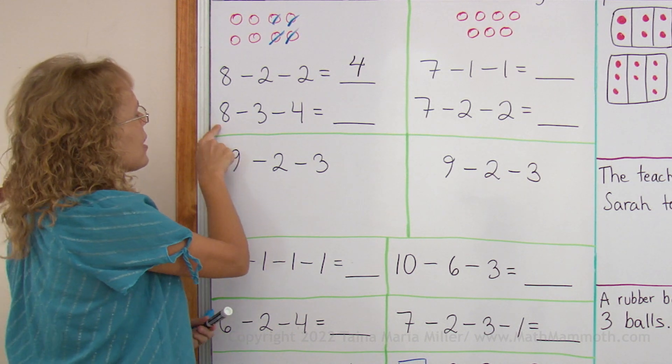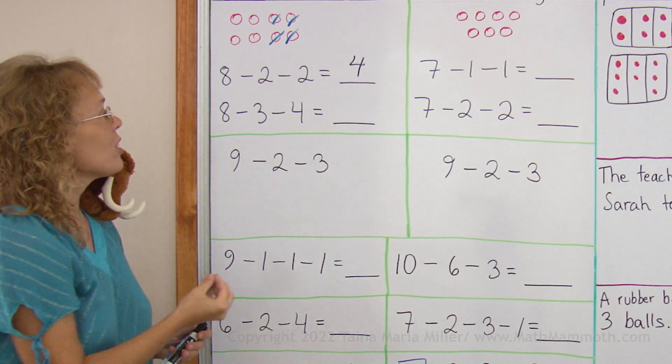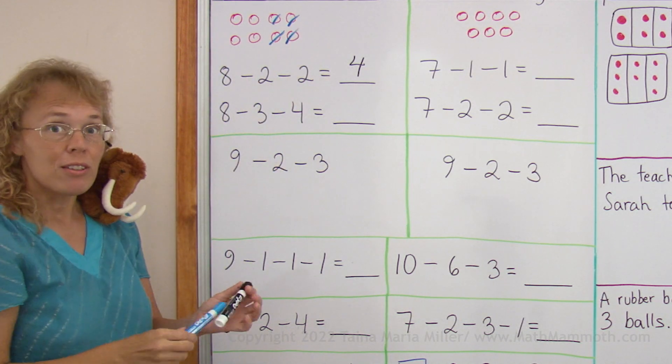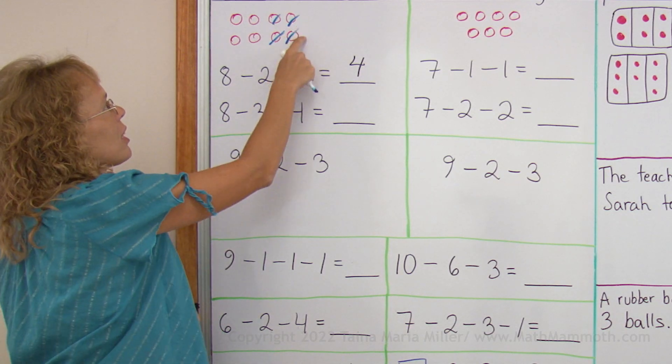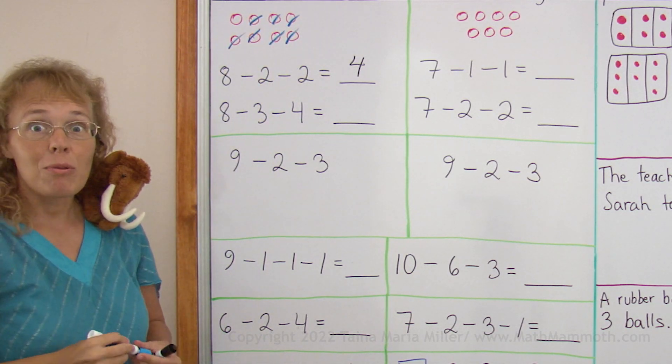Another problem, let's say we have 8, take away 3, take away 4. Again you can use the picture. You can take away 3: 1, 2, and 3. You can take away 4 more. If you have taken away those three, then 1, 2, 3, 4 more and only one is left.